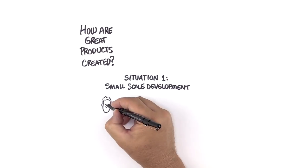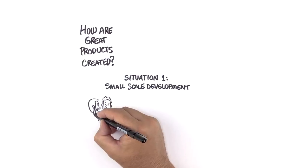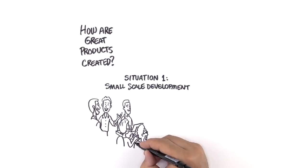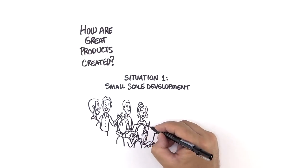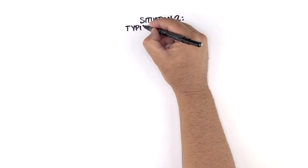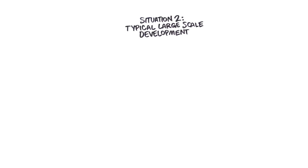How are great products created? To develop a great small product, we'd sit together with our team and the customer, give them a new version every few minutes, and work together on the technology to solve their problems. You already know this is the best way to develop small products, but what usually happens with large product development?